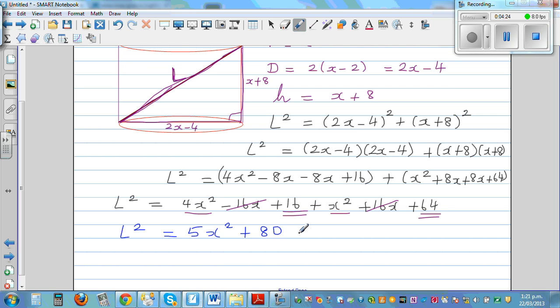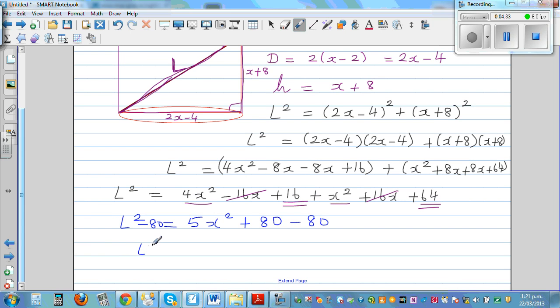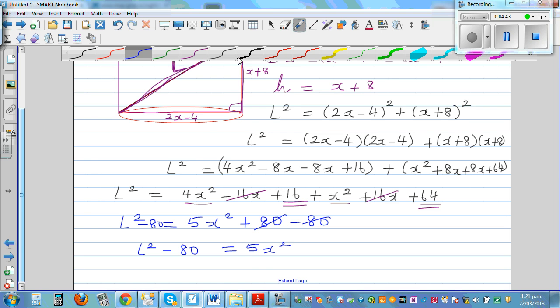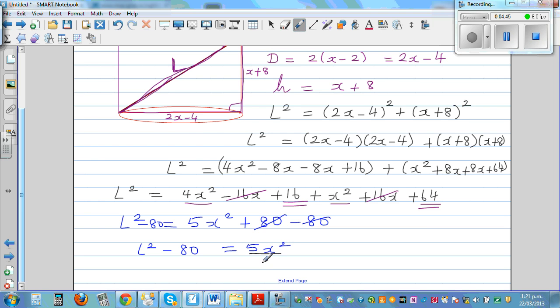So let's take away 80 from both sides. You can say L squared minus 80 is equal to 5x squared. So I'm going to divide both sides by 5. This implies your x squared is L squared minus 80 divided by 5.